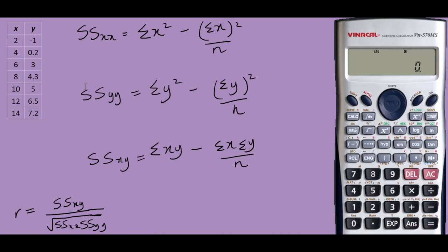Now we can insert our data. Always start by inserting the values of x and then y. It's always x comma y. I start with x which is 2, then select comma — just beside the M+ — and y is negative 1, then press M+. That is our first data point.